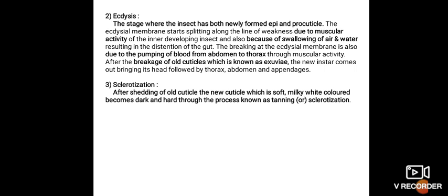Ecdysis. The stage where the insect has both newly formed epicuticle and procuticle, the ecdysial membrane starts splitting along the line of weakness due to muscular activity of the inner developing insect and also because of swallowing of air and water resulting in the distension of the gut. The breaking at the ecdysial membrane is also due to pumping of blood from abdomen to thorax through muscular activity.